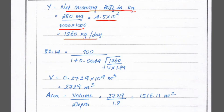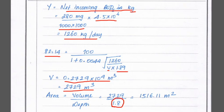Substituting all values into the formula: 82.14 = 100 / (1 + 0.0044 × √(1260 / (v × 1.89))). Solving for v, we get v = 0.2729 × 10⁴ m³ = 2729 m³. Then area = volume / depth = 2729 / 1.8 = 1516.11 m². That is the area of the trickling filter.